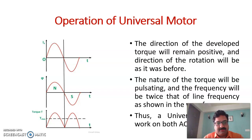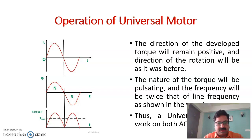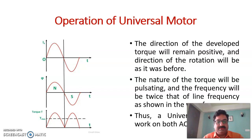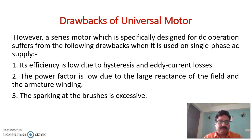Therefore the rotation will be in the same direction. From the waveform shown on the screen, the nature of the torque will also be pulsating, and the frequency of the torque pulsation will be twice that of the supply frequency. The universal motor will work in both cases — AC as well as DC. The direction of the torque remains in a single direction, so unidirectional torque is obtained whether using AC or DC supply, with the field and armature arrangement producing unidirectional torque.